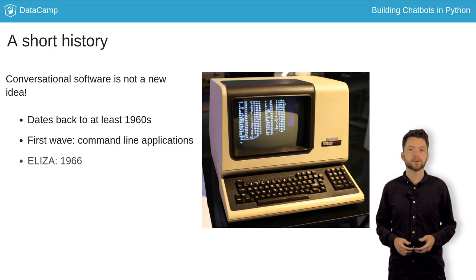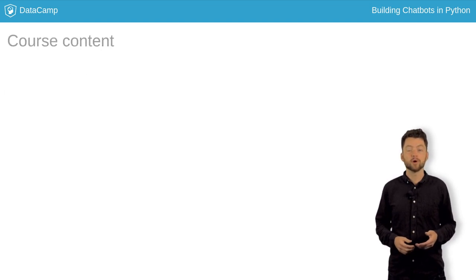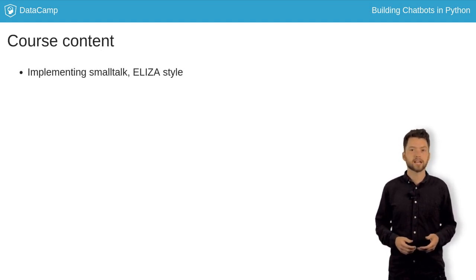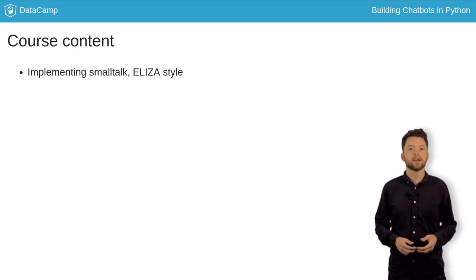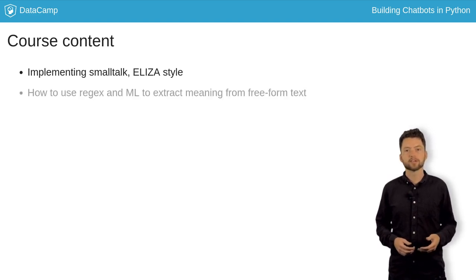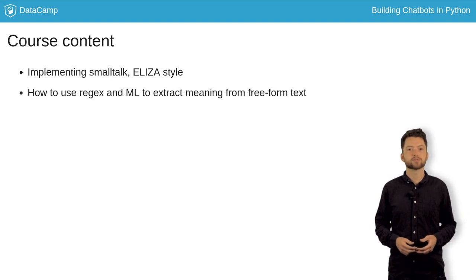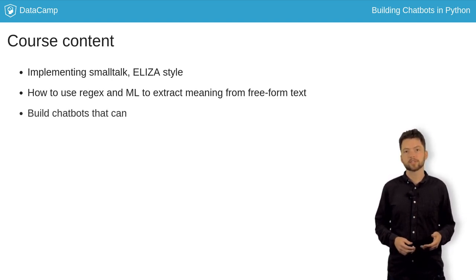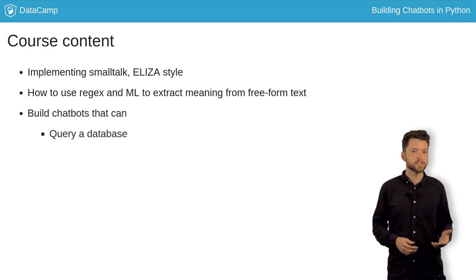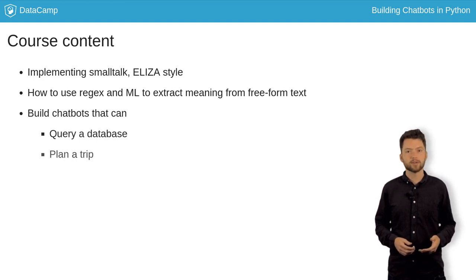In this chapter, you will build your own minimal version of the ELIZA chatbot. In the following chapters, you will learn how to use regular expressions, as well as machine learning to extract meaning from free-form text. You will build chatbots that can query a database, plan a trip, and help you order coffee.